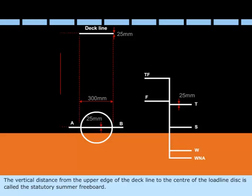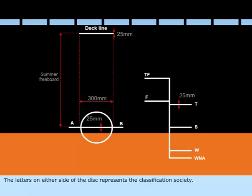The vertical distance from the upper edge of the deck line to the center of the load line disc is called the statutory summer freeboard. The letters on either side of the disc represent the classification society.